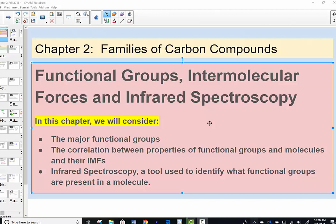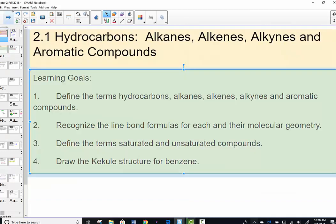The chapter will begin looking at the backbone of all organic compounds known as the hydrocarbons: alkanes, alkenes, alkynes, and the aromatic compounds. In the first section, we learn how to define a hydrocarbon and look at the families that belong in that group. We recognize the line bond formula for each and their molecular geometry, become familiar with the term saturated, and look at the Kekule structure for the molecule known as benzene, the aromatic compound.